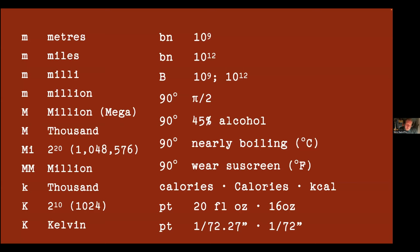When we report our results, we have to take responsibility for making sure people understand them. We use all sorts of crazy units and the same abbreviations for different things. Is M meters, miles, milli, or million? Is a big M a thousand? Are two Ms a million? There are K's, English billions versus US billions. Is 90 degrees π/2, 45% alcohol, nearly boiling in Celsius, or just needing sunscreen? Don't get me started on calories versus kilocalories.